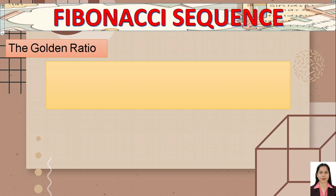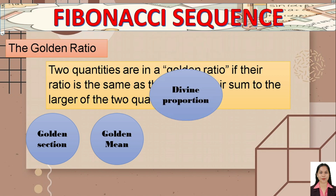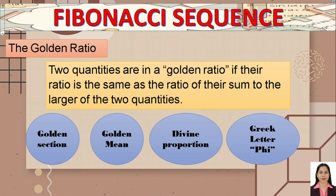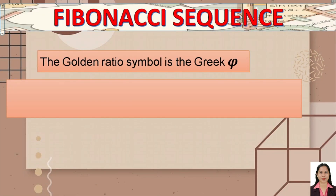In mathematics and arts, two quantities are in a golden ratio if their ratio is the same as the ratio of their sum to the larger of the two quantities. The golden ratio can also be called the golden section, golden mean, divine proportion, and is represented by the Greek letter phi. The value of the golden ratio is approximately 1.618.